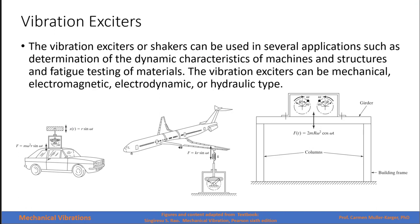Lastly, we will talk about vibration exciters. Vibration exciters or shakers can be used in several applications such as determining the dynamic characteristics of machines and structures, and testing of materials. The vibration exciters can be mechanical, electromagnetic, electrodynamic, or hydraulic types. For example, we give a shaker to a vehicle and measure the vibration response to determine the equivalent constants for the springs and dampers. Similarly, for an airplane wing, if we give an initial displacement or excite the system with a harmonic input, we can measure the equivalent damping of the system.